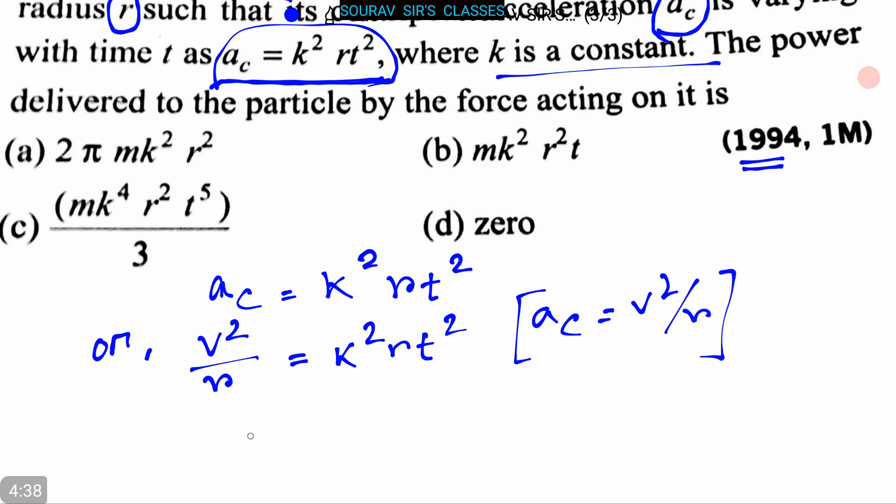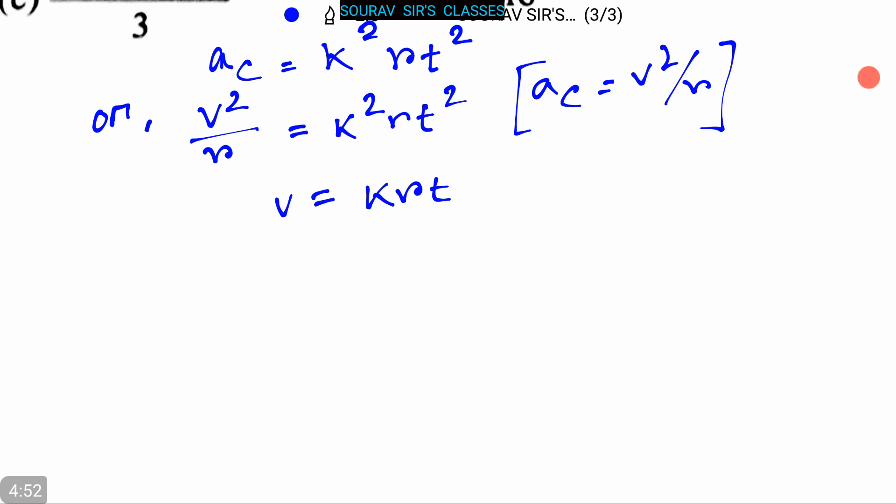Or we can rewrite it as v is equal to krt. Therefore the tangential acceleration at is equal to dv by dt, that is equal to kr.